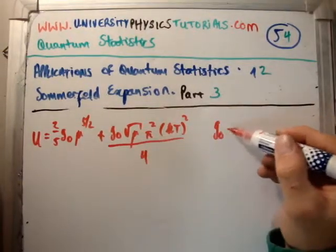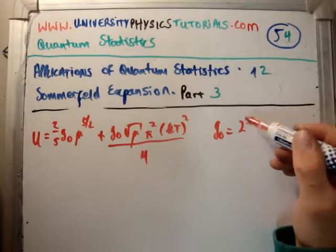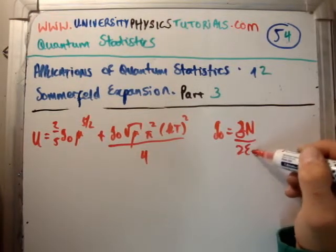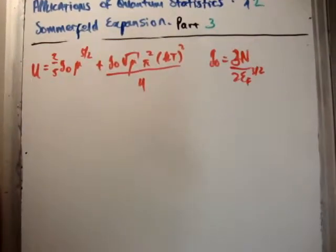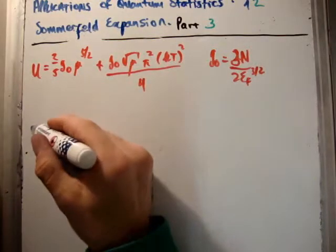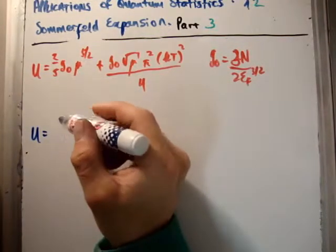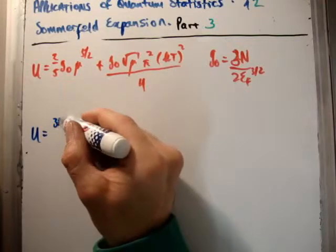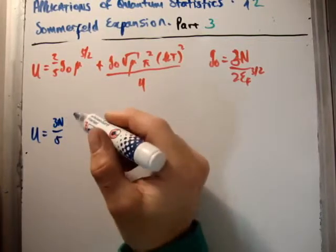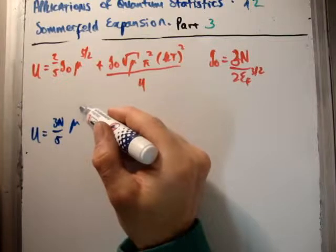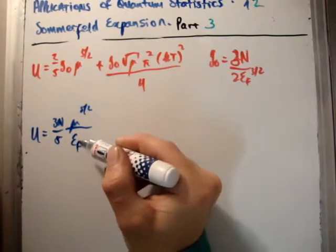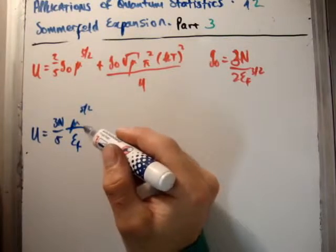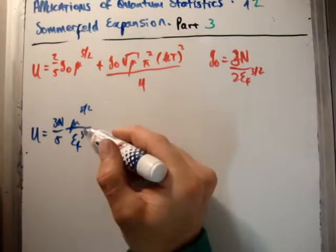Now remember, of course, that g0 is equal to 3 times n over twice E Fermi to the 3 over 2. So what I'm going to do is plug in this value for g0. You plug it in and you just make it look nice. You're going to get that u is equal to 3 times n over 5. We're going to get mu to the 5 over 2. We're going to get E Fermi to the 3 over 2 this time.